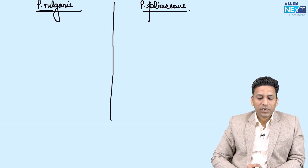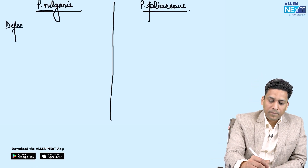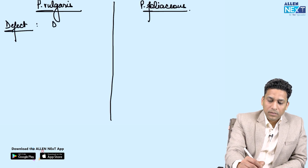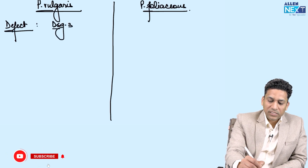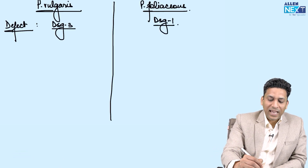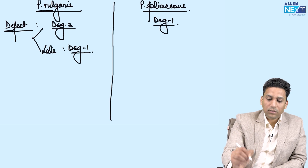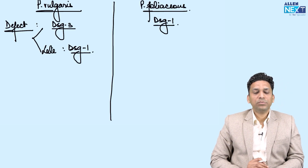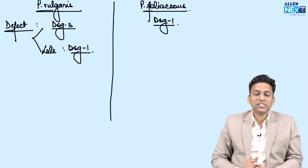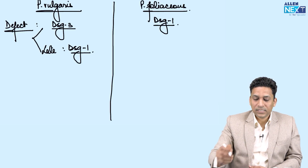The first difference between Pemphigus vulgaris and Pemphigus foliaceus is the defect. Desmoglein 3 is involved in Pemphigus vulgaris while Desmoglein 1 is involved in Pemphigus foliaceus. However, as the disease progresses, Desmoglein 1 also gets involved later in vulgaris.